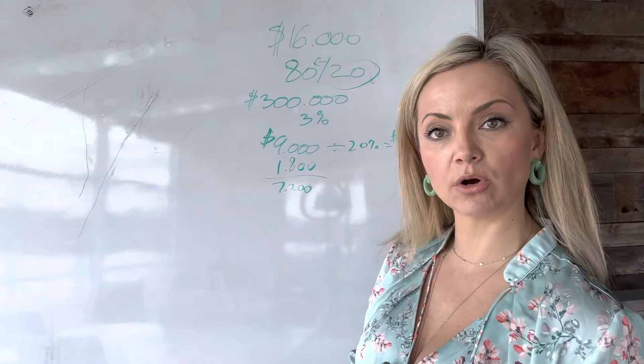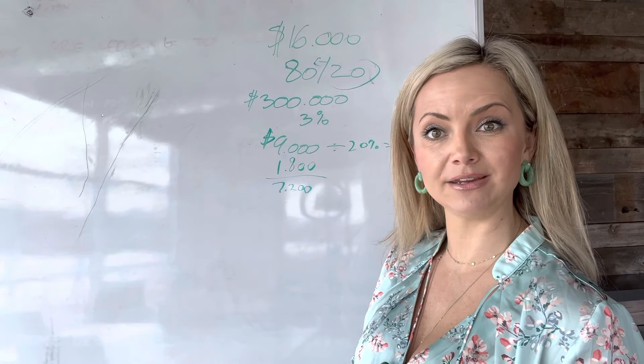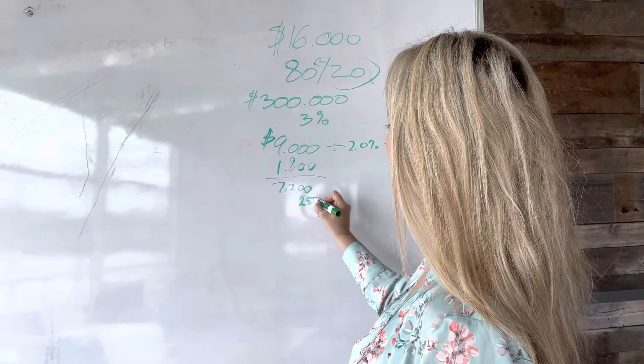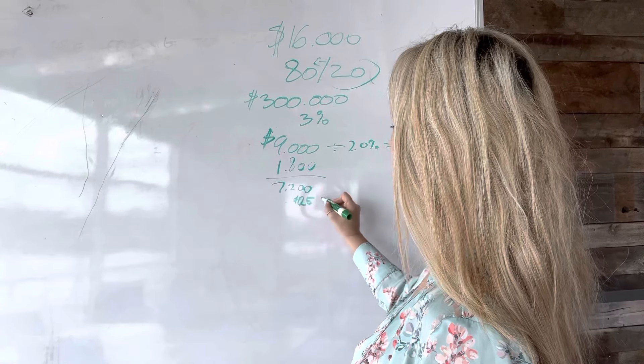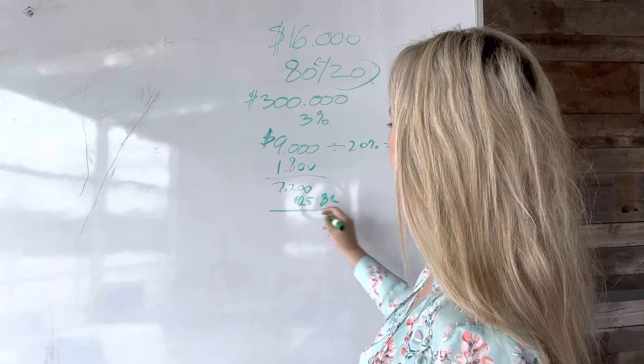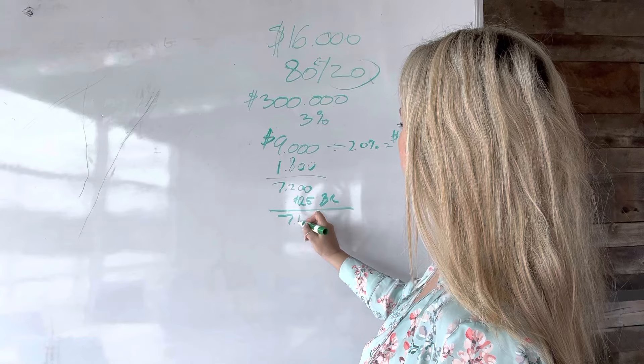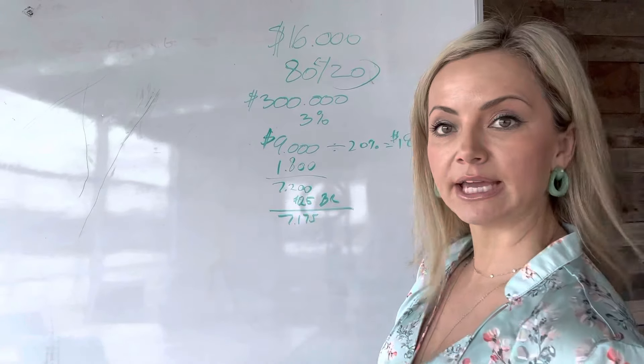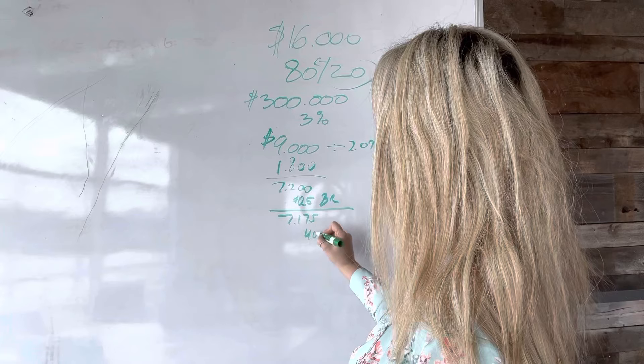Depending what brokerage you are with, you're going to have different fees. At my brokerage, we have what's called a $25 broker review fee. So it's a BR, broker review fee. That means it's $7,175. Then they take out what we call a $40 E&O.